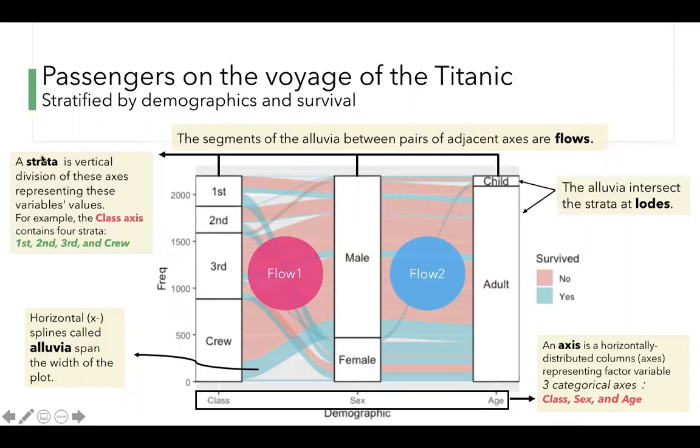Vertical divisions, also called strata, of these axes represent these variables' values. And splines connecting vertical subdivisions within strata of adjacent axes represent subsets or amounts of observations that take the corresponding values of the corresponding variables. The segments of alluvium between pairs of adjacent axes are flows. The alluvial intersect the strata at lodes.